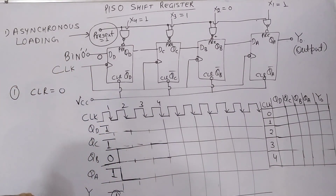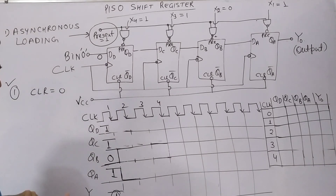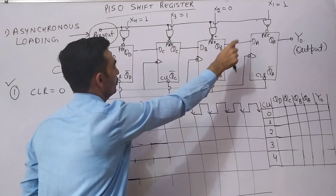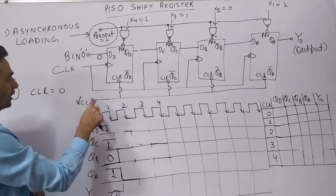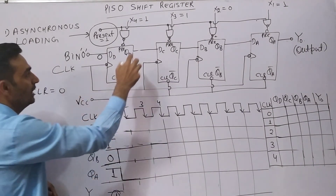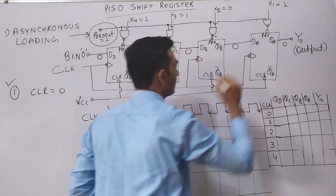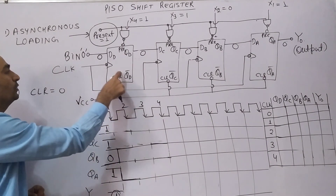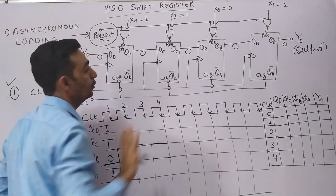In order to start functioning, step number 1: let clear equal 0. Initially, we want all the flip-flops to be loaded with 0, 0, 0, 0. For that, we connect the clear pin to ground initially for some fraction of time, and all flip-flop outputs get 0. Now we connect clear to VCC and the clear pin functioning is no longer required.